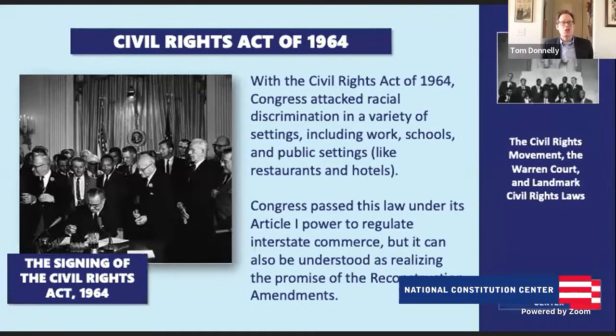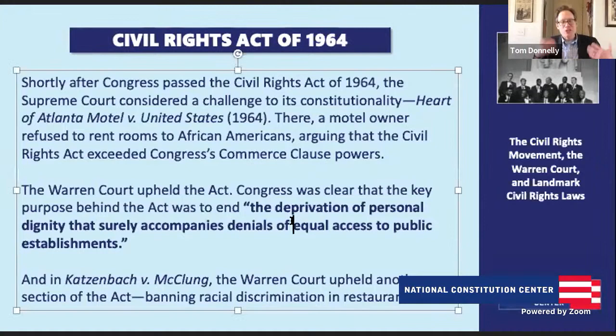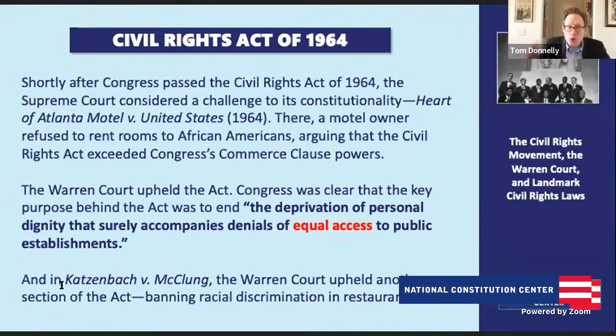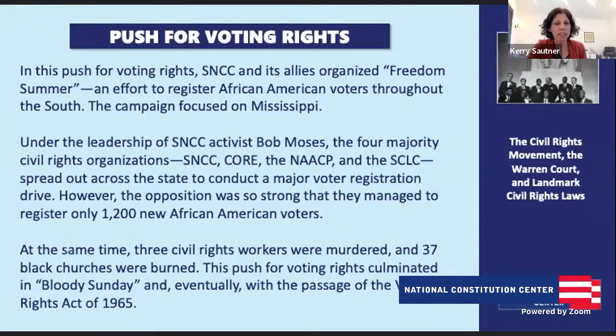It would take a lot of work, a lot of lobbying, overcoming filibusters by those who oppose the legislation, but in the end Congress passes the Civil Rights Act of 1964 — one of the biggest pieces of legislation ever passed by Congress. It promotes and attacks racial discrimination in various settings: at work, in schools, in public settings like restaurants and hotels. Shortly after, it ends up before the Supreme Court, and the Warren Court in a pair of landmark decisions — Heart of Atlanta Motel and Katzenbach v. McClung — upholds it as constitutional.